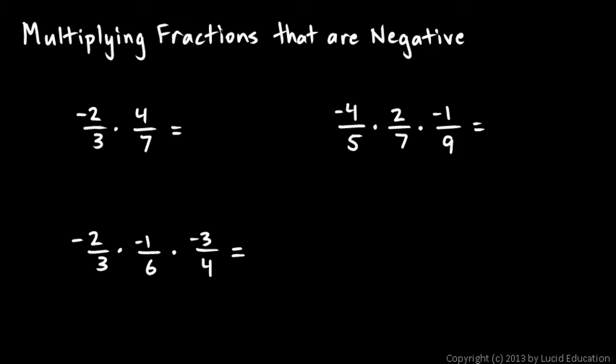The rules here are the same as the rules we've seen before. If we have a negative number times a positive number, the result will be negative.